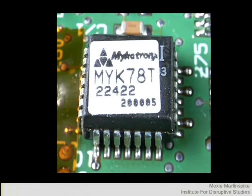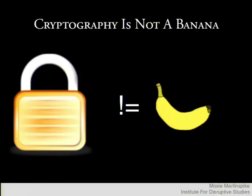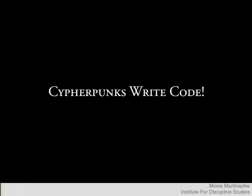The main problem for the eavesdroppers during this time is that cryptography is not a banana. Information is not an object. If you have a banana and you share it with a friend, there is still only one person in the world with a banana. With information, every time you share it, you make a copy, and you increase the chance for an exponential explosion of that information. This situation was made worse by one of the main cypherpunk mantras: cypherpunks write code.